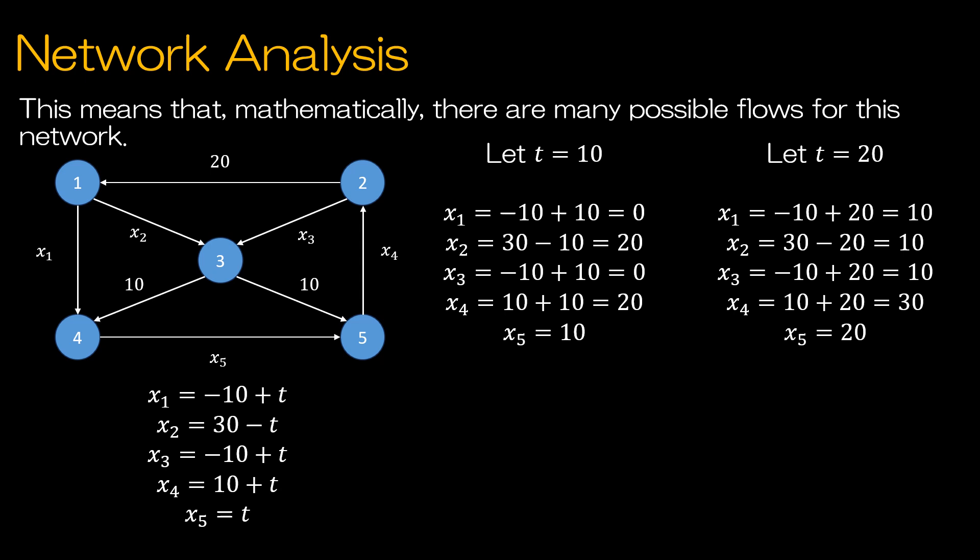because we're talking about a network, a real-life situation, we need to understand that network flow into or out of any junction has to be greater than or equal to 0. I can't have a negative flow.